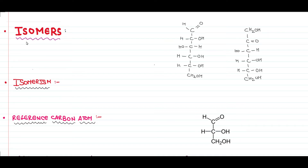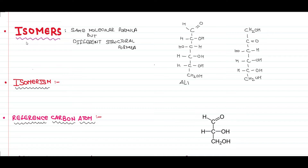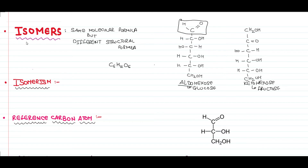The first term is isomers. Isomers are compounds that have the same molecular formula but different structural formula. For example, we have the hexose compounds: aldo-hexose and keto-hexose, commonly known as glucose and fructose. The molecular formula for both is C6H12O6, but the structural formula varies — glucose has an aldehyde group at the first carbon, whereas fructose has a ketone functional group at the second carbon.